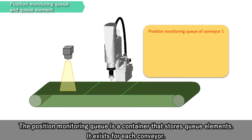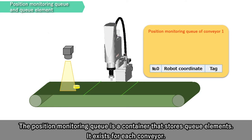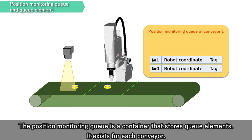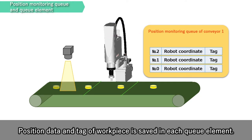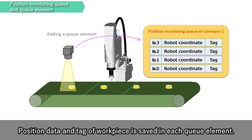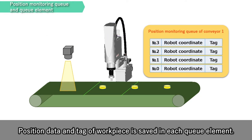The Position Monitoring Queue is a container that stores queue elements. It exists for each conveyor. Position data and tag of each workpiece is saved in each queue element.